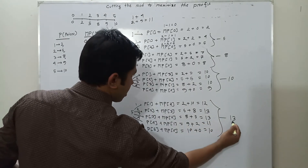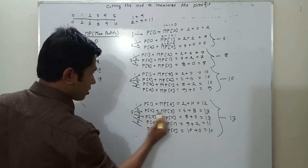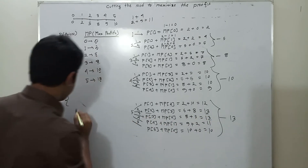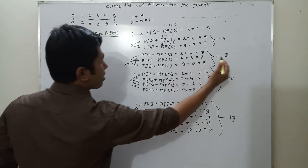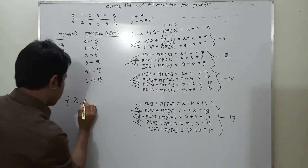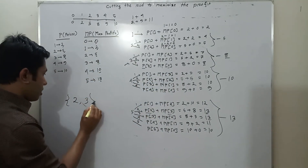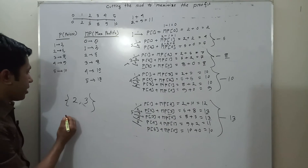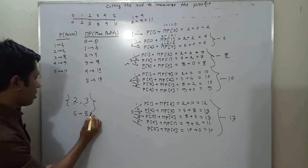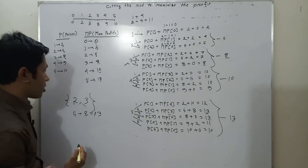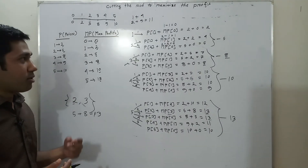The maximum value is 13, achieved at size 2 and also size 3. We can use either. Suppose we pick size 2: price is 5, and max profit of remaining size 3 is 8. For size 3: the max profit is 0. So the optimal cuts are 2 and 3. For size 2 the price is 5 and for size 3 it is 8, giving 5 plus 8 equals 13. We get the maximum profit by cutting the rod into pieces of length 2 and 3.